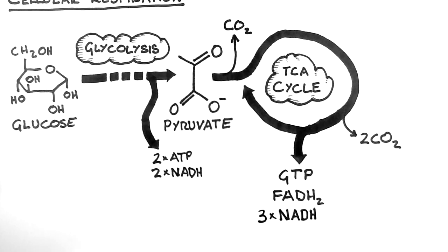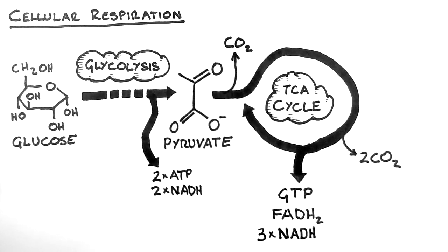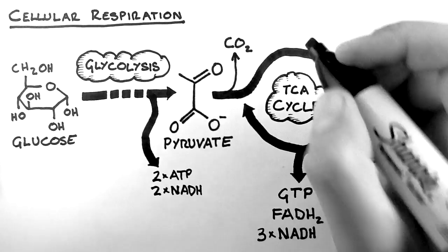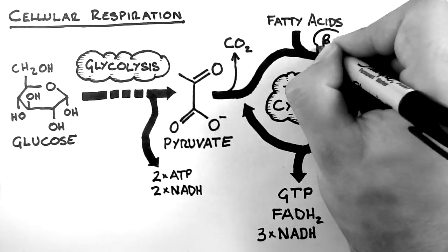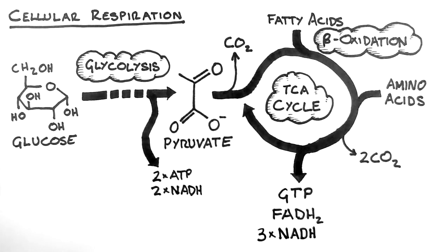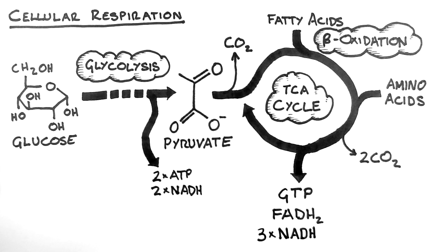Now pyruvate isn't the only substrate for the TCA cycle. Amino acids can be used in the TCA cycle, and so can fatty acids, via a process called beta-oxidation. We'll look at the TCA cycle and beta-oxidation in later tutorials.